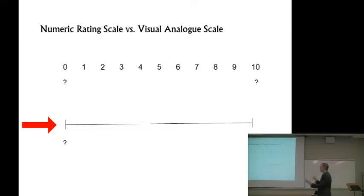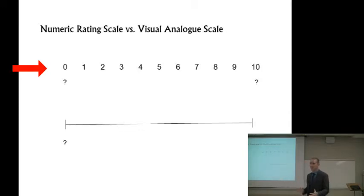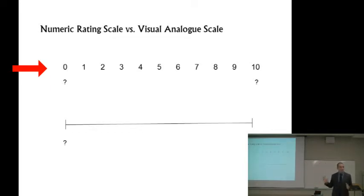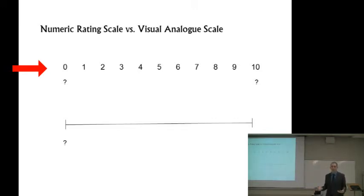The numeric rating scale is the one on the top, where it actually gives you numbers: 0, 1, 2, 5, 6, 7, 8, 9, 10. Sometimes it goes up to 20, sometimes even up to 100, depending on how fine a gradation you want. It anchors on either end, and the patient circles a number or just tells you the number. You can administer it verbally, which is one of the nice things about this — it takes literally 30 seconds to apply and can be interpreted immediately.